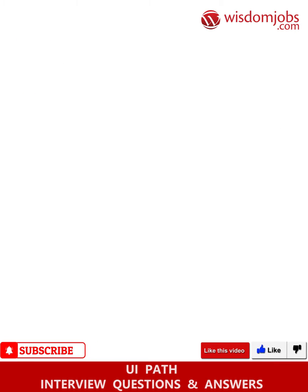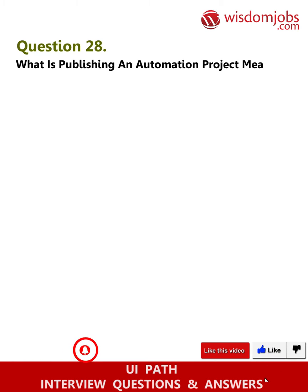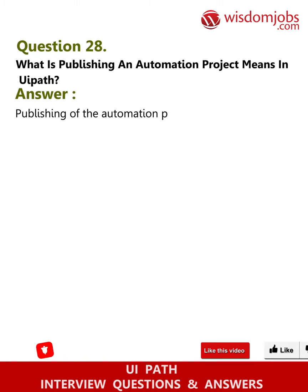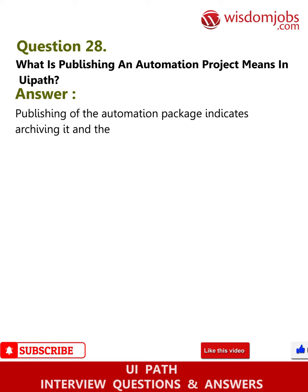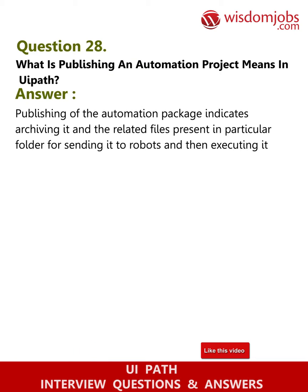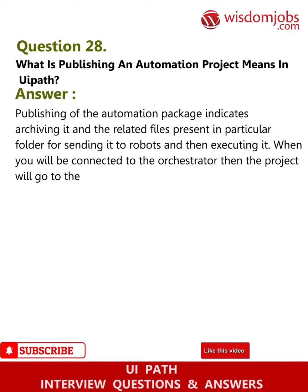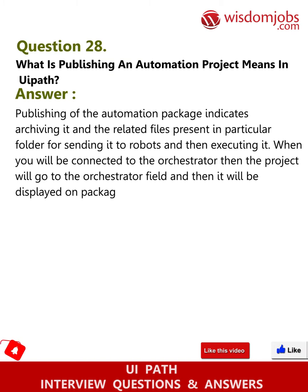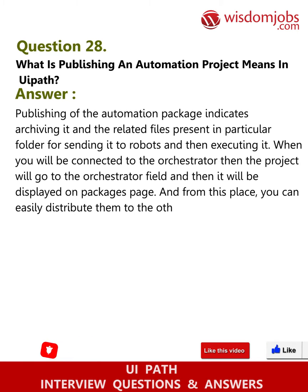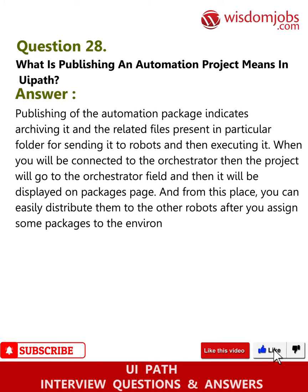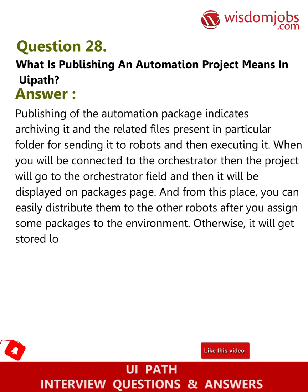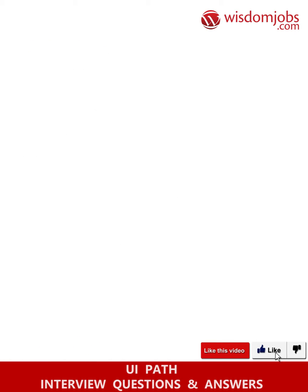Question 28: What does publishing an automation project mean in UiPath? Answer: Publishing an automation package means archiving it and the related files in a particular folder for sending to robots and executing. When connected to Orchestrator, the project goes to the Orchestrator feed and is displayed on the Packages page, from where you can distribute it to other robots after assigning packages to the environment. Otherwise, it gets stored locally in the Studio feed.